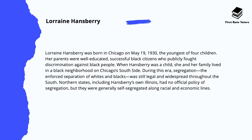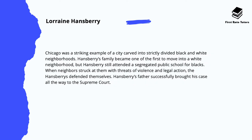In other words, African Americans didn't really mix with white Americans and vice versa. Chicago was a striking example of a city carved into strictly divided African American and white American neighbourhoods. Hansberry's family became one of the first to move into an all-white neighbourhood, however she attended a segregated public school for African Americans. When neighbours in the white community struck them with threats of violence and legal actions, the Hansberries defended themselves and her father successfully brought his case all the way to the Supreme Court.